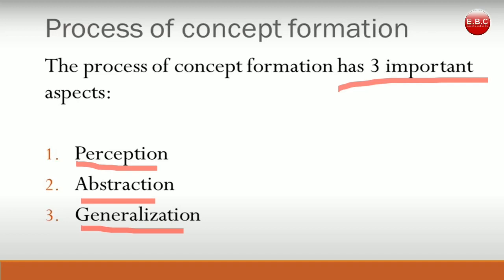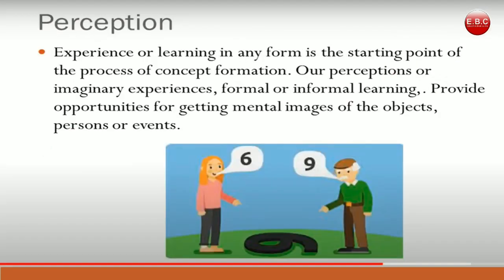Any concept that is formed will go through these three major stages. The first stage is perception, the second is abstraction, and the third is generalization. First we perceive a concept and form an idea about it, then we internalize or abstract that idea, and then whenever we are in a different situation we try to compare or contrast that idea and form a general view of the present situation.